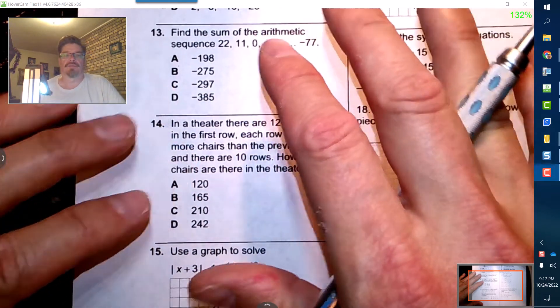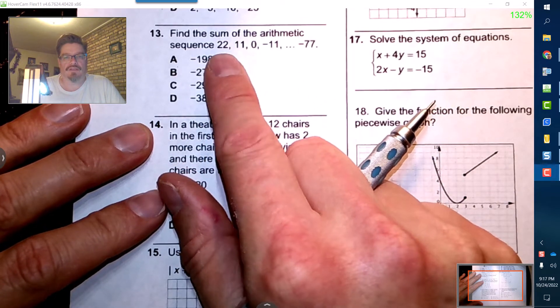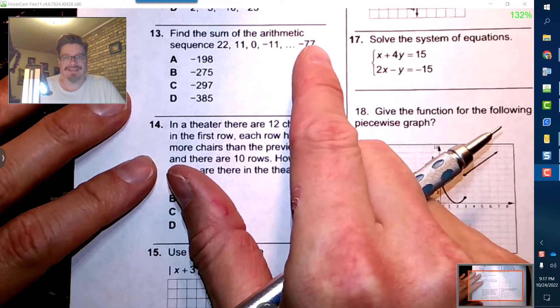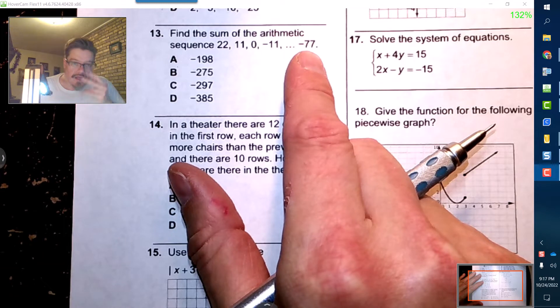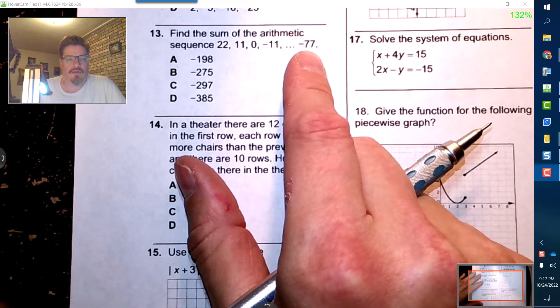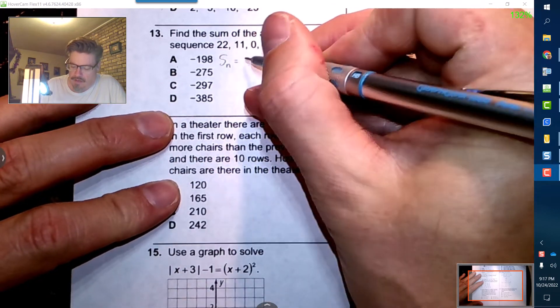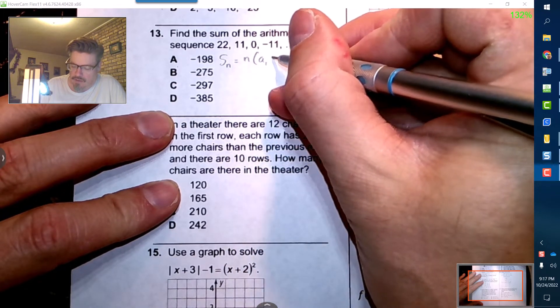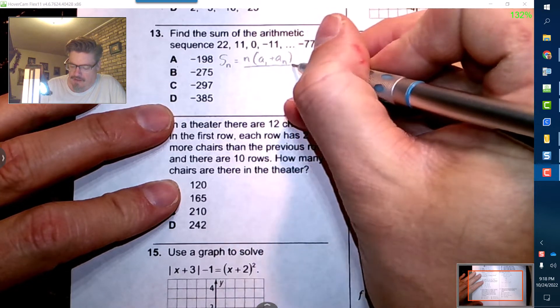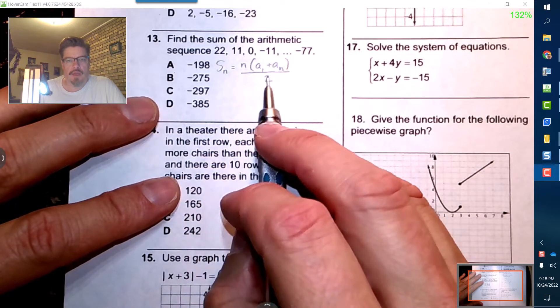All right, now here we're gonna find the sum of the arithmetic sequence from 22 and it looks like it goes down by 11 all the way to negative 77. Now what we can do is we're gonna actually have to be careful here because if I want the sum I need to use this formula here. And it's initial 1 plus the last one, we divide that by 2.